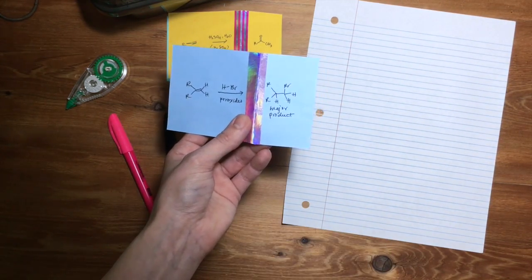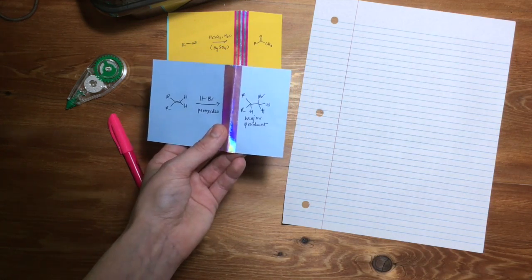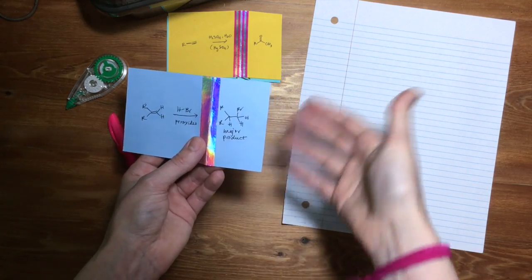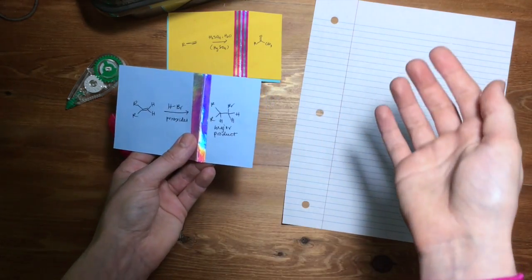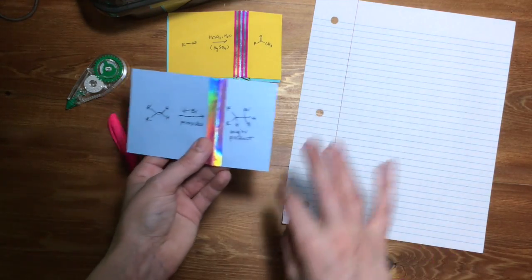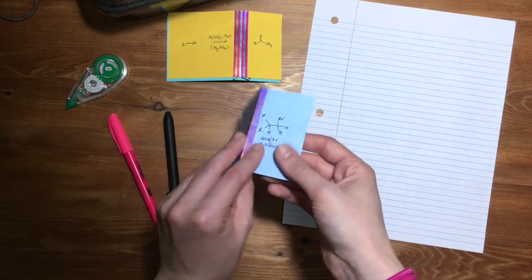And most of the time you want to focus on the major product. But if it's a problem that's going to involve regioselectivity, you're going to want to put all of the products and then kind of tell yourself by temperature, what's the major product and what percentage is that? Is it 80%, 70% versus the minor product, which is the 30%.